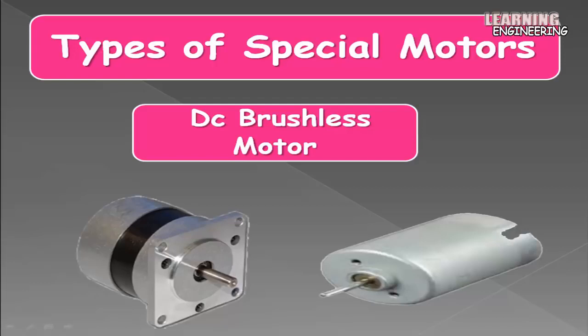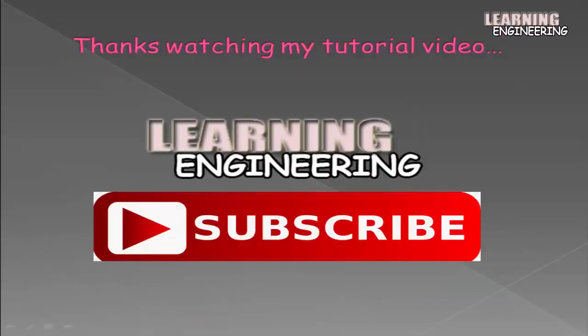DC brushless motors: brushless DC electric motors, also known as electronically commutated motors, are synchronous motors powered by a DC electric source via an integrated inverter switching power supply, which produces an AC electric signal to drive the motor. In this context, AC does not imply a sinusoidal waveform, but rather a bi-directional current with no restriction on waveform. Additional sensors and electronics control the inverter output amplitude, waveform, and frequency.